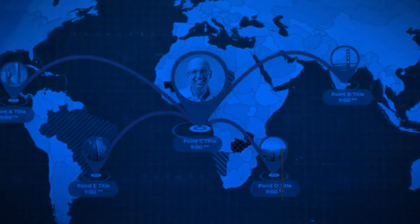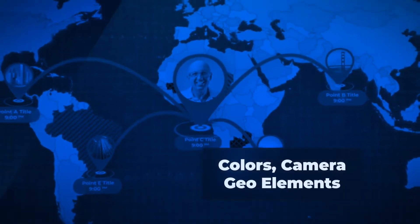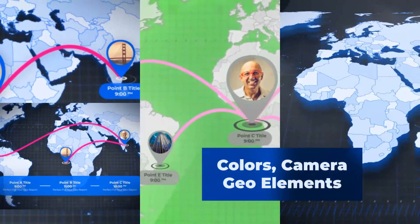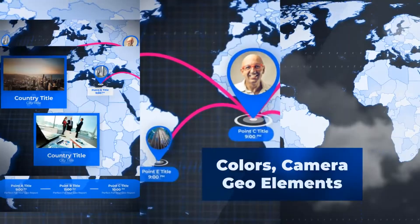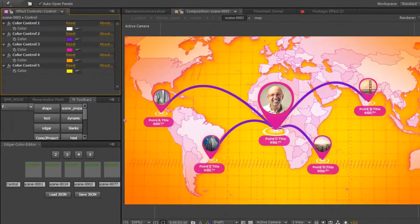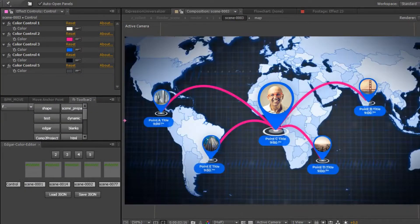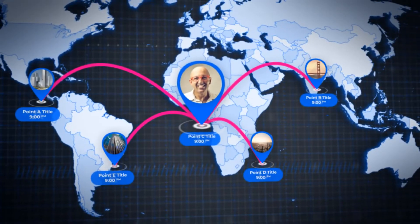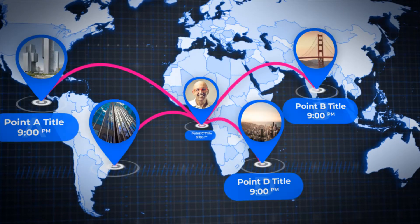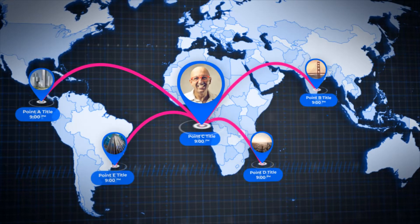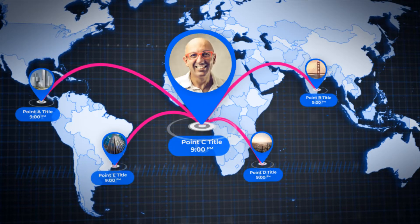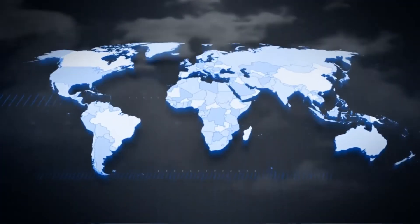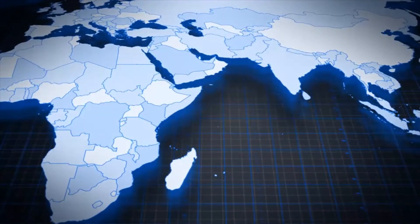Working with the template is easy because the project contains three types of settings. The first type allows you to customize the colors of the map individually for your design. The second type adjusts the position of geo marks and routes on the map. The third type controls camera movement over the map, so you can come closer to any point with ease.